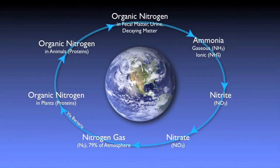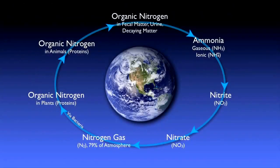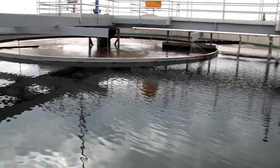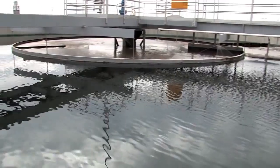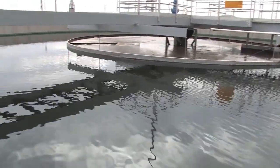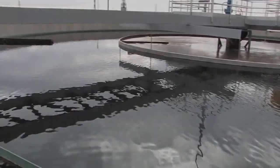In summary, a wastewater treatment plant helps nitrogen through the nitrogen cycle by optimizing conditions for nitrification and denitrification. By doing so, wastewater treatment plants help minimize the human impact on our fresh waterways and environment.